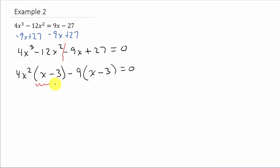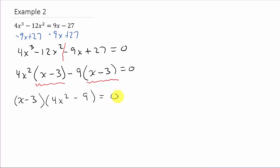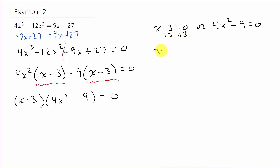Now I have a common binomial factor of x minus 3. Factoring out x minus 3 from the first term leaves 4x squared, and from the second term leaves minus 9. That equals zero. Setting each factor equal to zero: x minus 3 equals zero gives x equals 3. There's one solution.